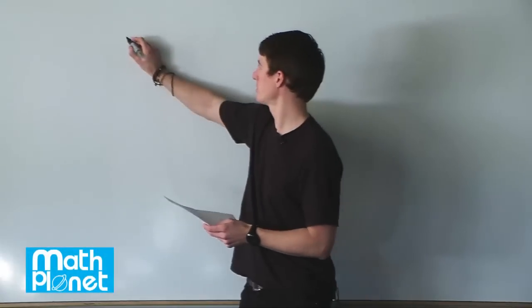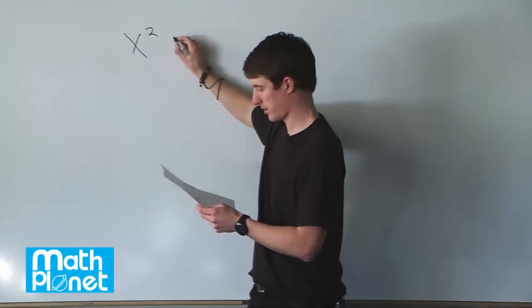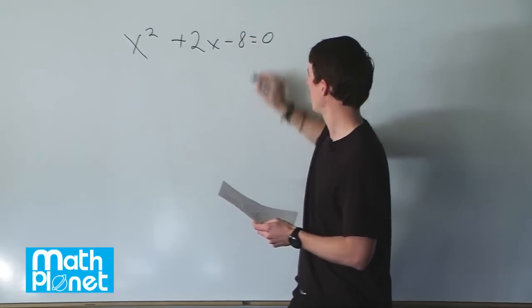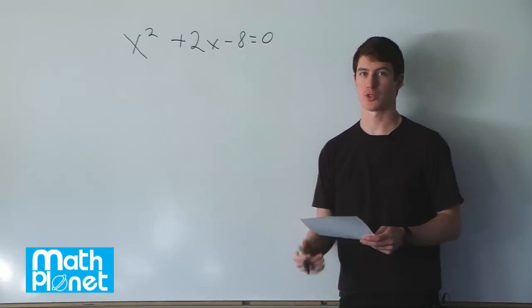Here we have another quadratic equation, x squared plus 2x minus 8 equals 0, and we want to solve for this using the quadratic formula.